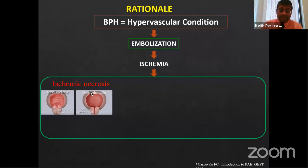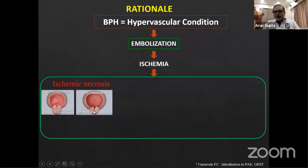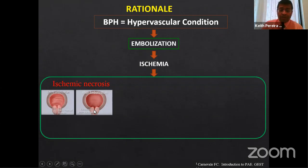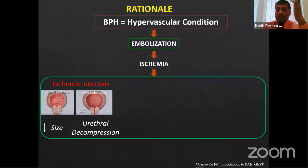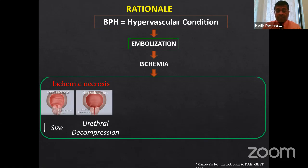More ischemia happens in the center of the gland than in the periphery, which is very important — unlike a fibroid where you're just shrinking the whole thing. Most urological therapies work from the inside, so opening up the gland from inside is exactly what happens with PAE. It decreases the size of the prostate but more importantly causes urethral decompression — that's the big principle. PAE is often compared to UFE (uterine fibroid embolization) since both shrink tissue.